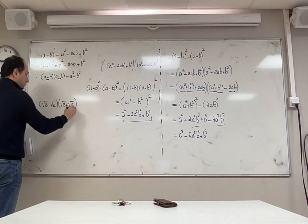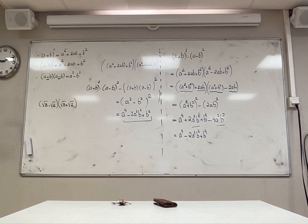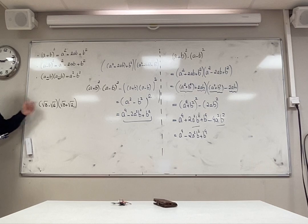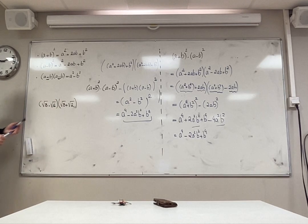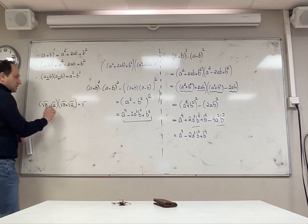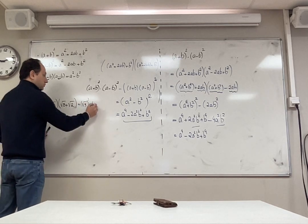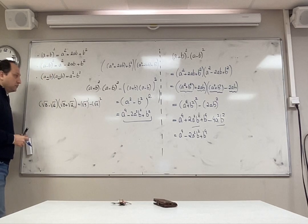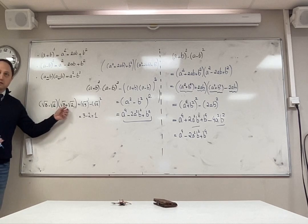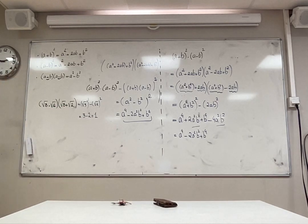Numerical example: square root of three minus square root of two, multiplied by square root of three plus square root of two. Do you see the conjugate pattern? The first one in the subtraction term is square root of three. So the answer is square root of three squared minus square root of two squared, which is three minus two, exactly one. So multiplying those two numbers gives exactly one, not approximately one.